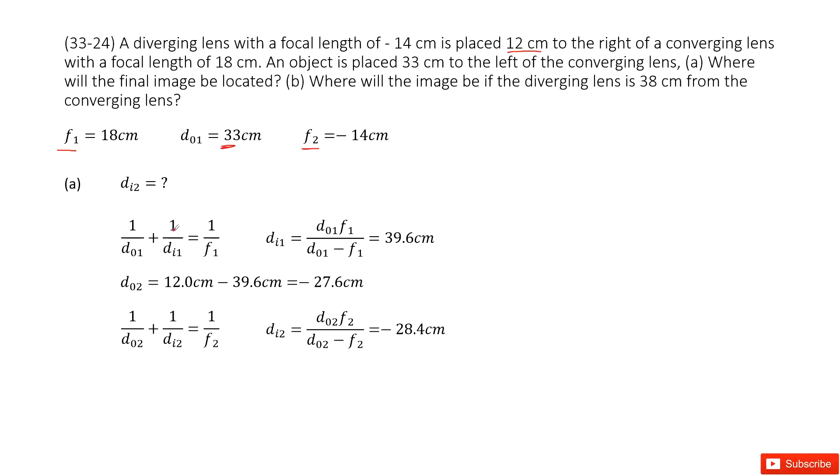Now we need to find the image for lens 2, which we call dI2. As we solve these problems, we always need to remember the image for the first lens should be the object for the second lens.